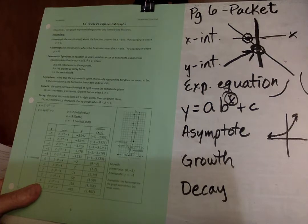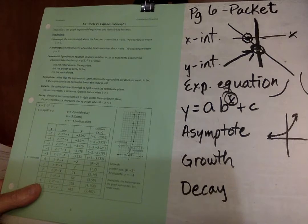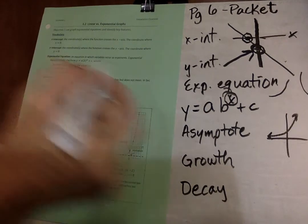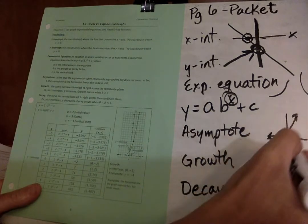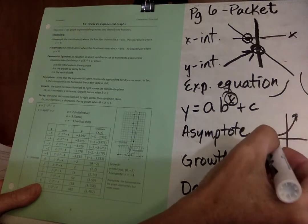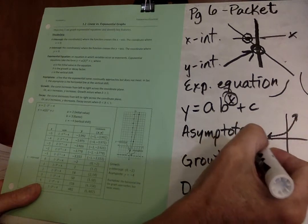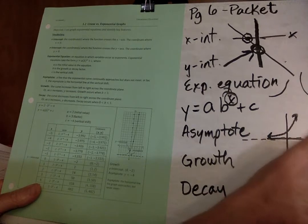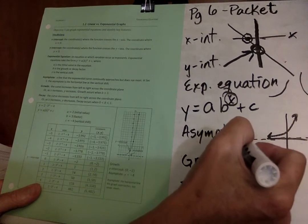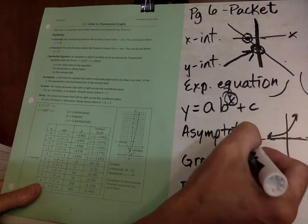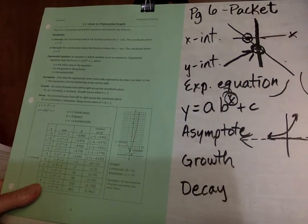Next, we're going to go over an asymptote, which is a line that the exponential curve continually approaches but does not meet. In secondary one, the asymptote is the horizontal line at the vertical shift, which doesn't make a lot of sense. So when we start getting into more, we'll go over that. For example, on this graph, this line right here will approach right here. So we can draw a dotted line right there. We know that this line will approach this line, but it will never cross this line.